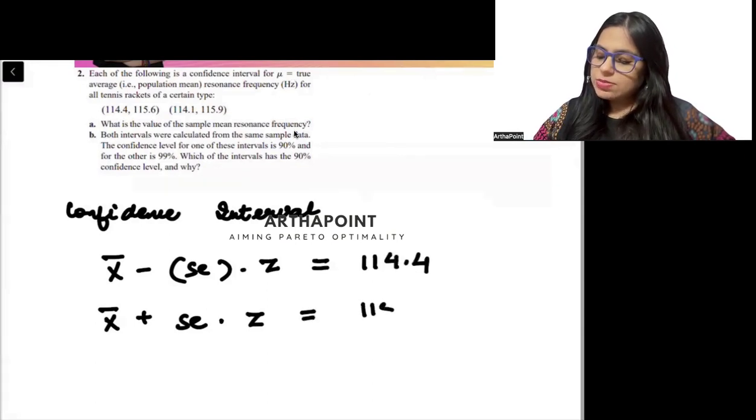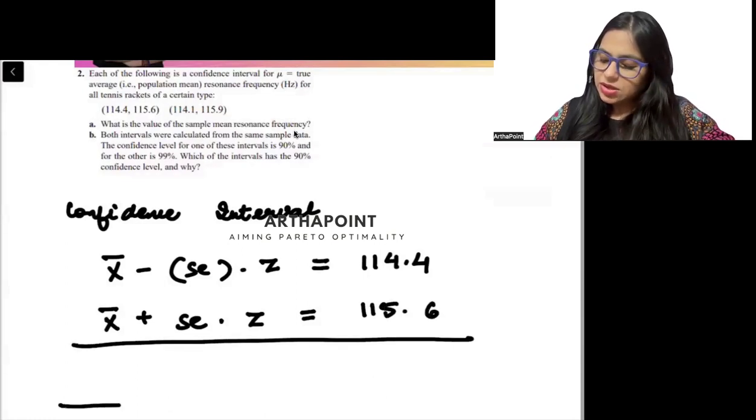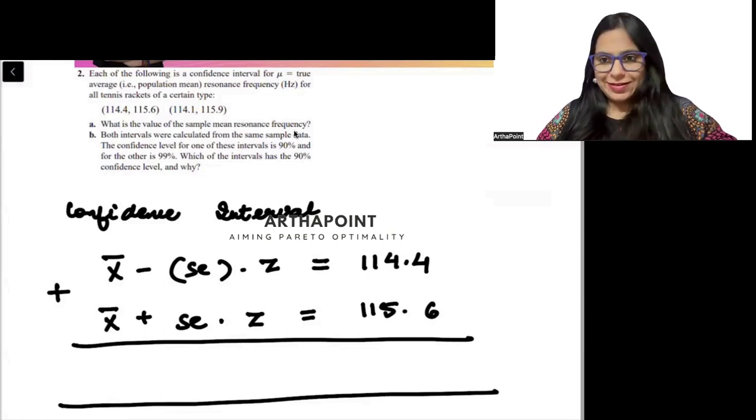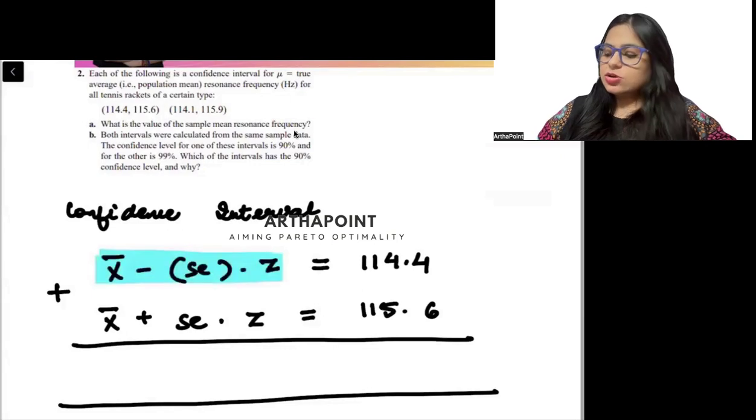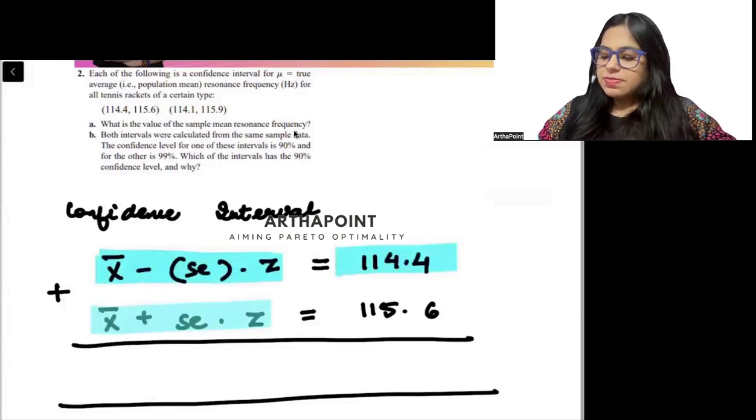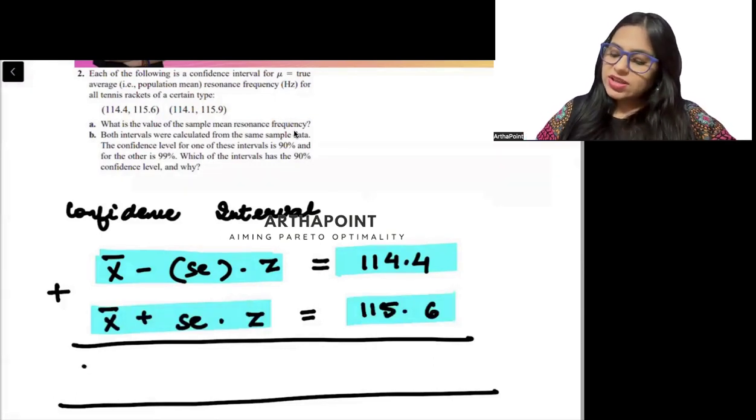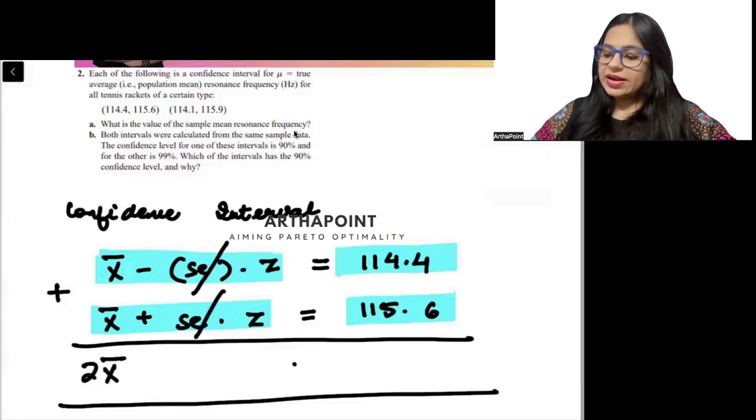This gives us the higher value which will be 115.6. Now, tell me something. If I just add these two equations together, this equation says x bar minus standard error into z is this. x bar plus standard error into z is this. If I just add these two things together, so I will get 2 x bar and these will cancel out with each other when I add them.